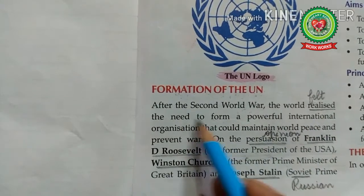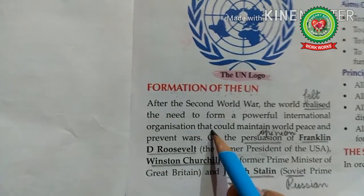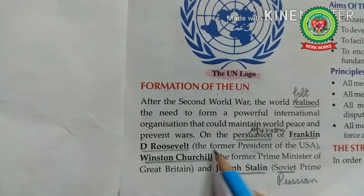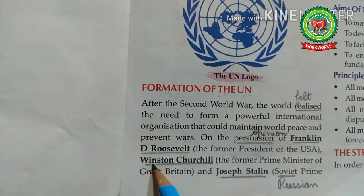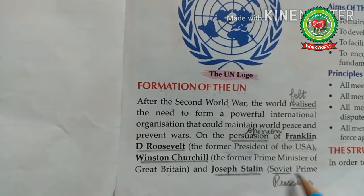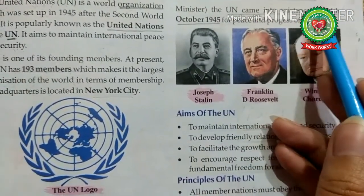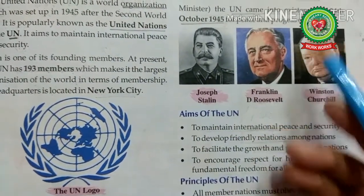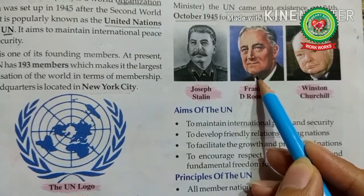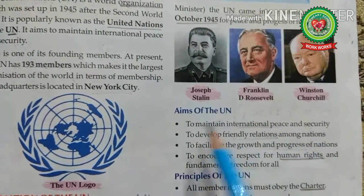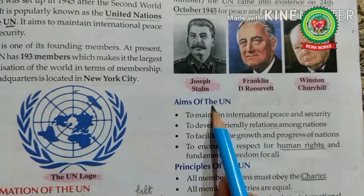After the Second World War, in 1945, the world realized the need to form a powerful international organization to maintain world peace and prevent wars. On the persuasion of Franklin D. Roosevelt, former President of the USA, Winston Churchill, former Prime Minister of Great Britain, and Joseph Stalin, Soviet Prime Minister, the UN came into existence on 24th October 1945 for the peace and progress of mankind. Franklin D. Roosevelt was the one who named the organization 'the United Nations.'